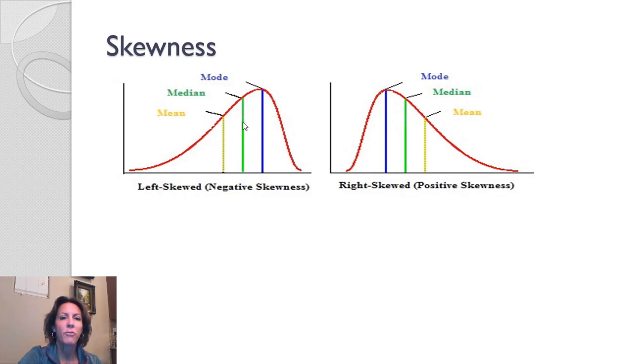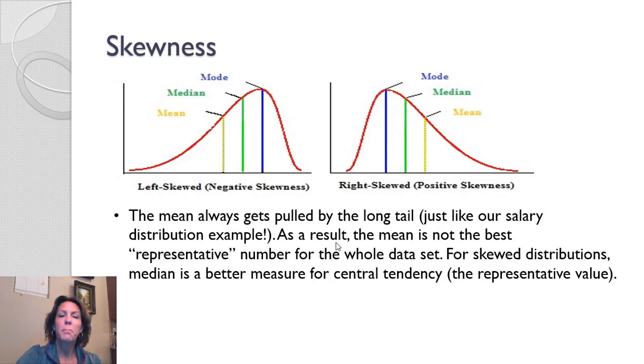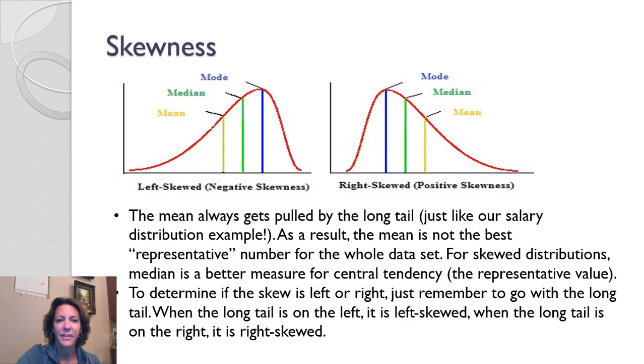They're pulling the mean away from what is really the central tendency of this data. So the mean gets pulled by the long tail. The mean is not always the best representative number for a whole data set. When we have skewed distributions, the median is a better measure of central tendency. To determine if it's a left skew or a right skew, just go with the long tail. When the long tail is on the left, it's left skewed. Long tail is on the right, it's right skewed. Left skewed is a negative skew, and right skew is a positive skew.